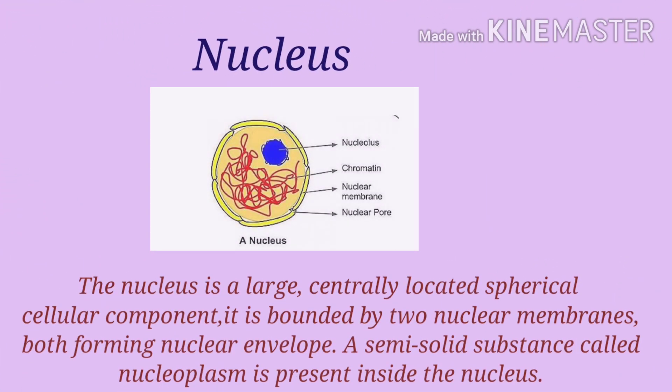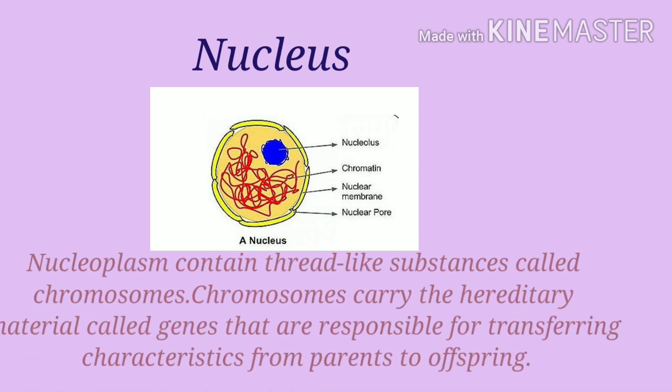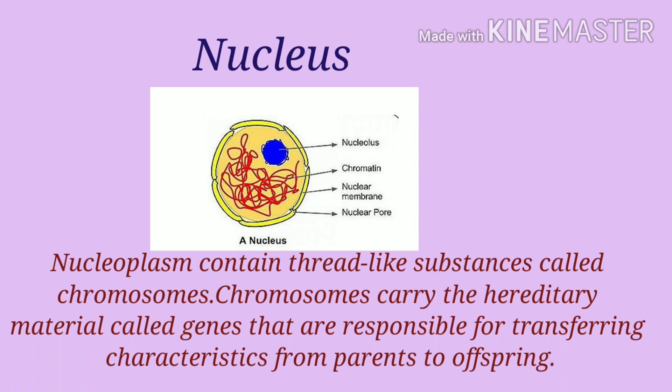Nucleus. The nucleus is a large centrally located spherical cellular compound. It is bounded by two nuclear membranes, both forming nuclear envelopes. A semi-solid substance called nucleoplasm is present inside the nucleus. The nucleoplasm contains thread-like substances called chromosomes. Chromosomes carry the heredity material called genes that are responsible for transferring characteristics from parent to offspring.